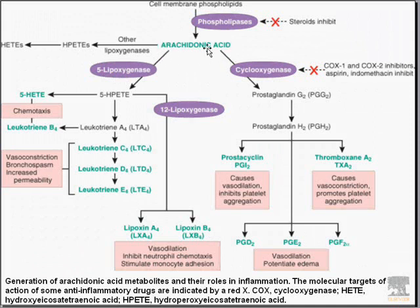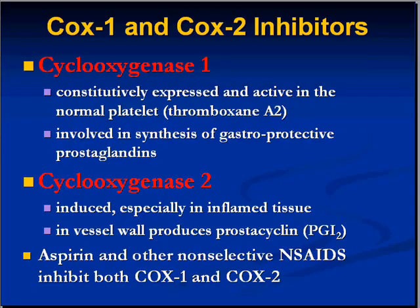For arachidonic acid to form into prostaglandins, prostacyclin, and thromboxanes, you need the cyclooxygenases — COX-1 and COX-2. So if you could specifically inhibit COX-2 without inhibiting COX-1, you'll take away most of the bad effects of aspirin.